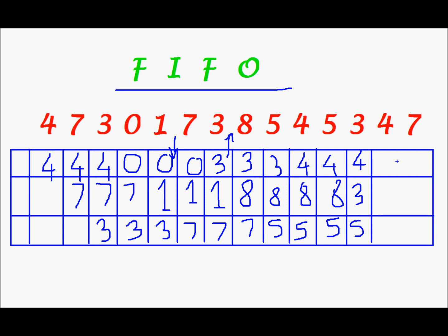Next, I need 4, and 4 already exists in the frames, so even this is a hit. No change has to be made. Next, I need 7. And out of 5, 3, and 4, 5 was the first to be brought in, and it will be the first to be removed. So now my frames will be 4, 3, and 7.